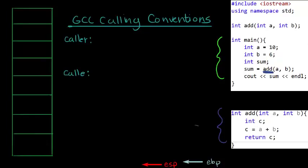Down here the add function is actually implemented — this is where the add function actually does its thing. So in this case, and in most cases, it's pretty easy to see who exactly is the caller and who is the callee. In our case, main is the caller and add is the callee.